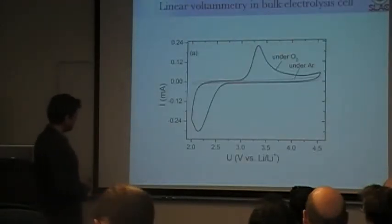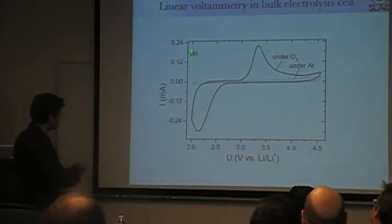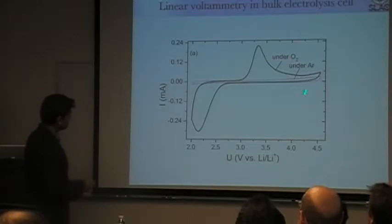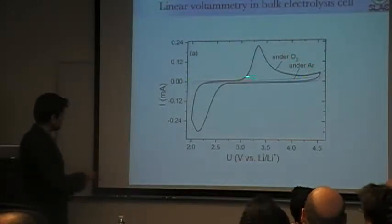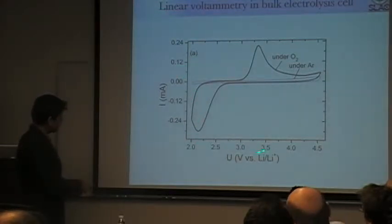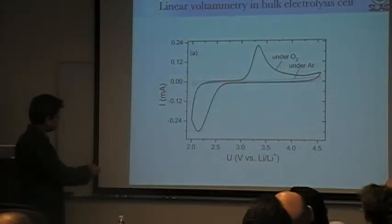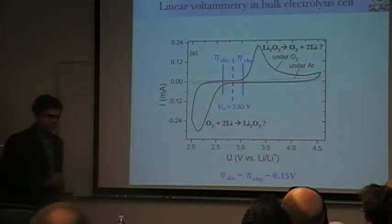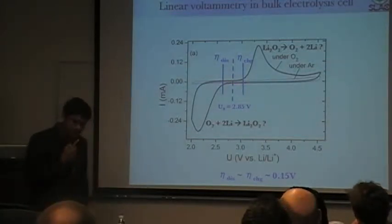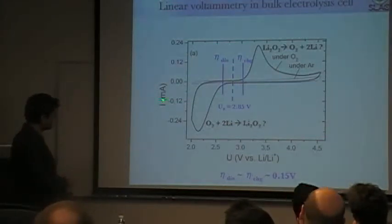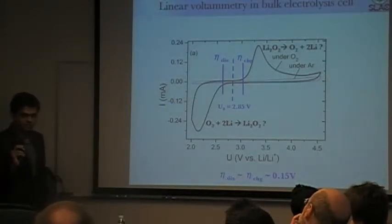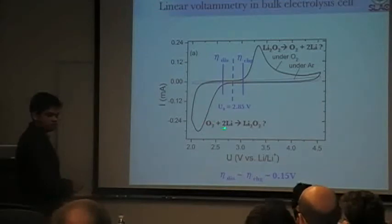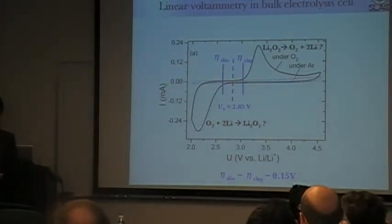What does the experiment say? One can look at linear sweep voltammograms — a plot of current as a function of potential under two different gas-purging environments: argon as background current, and oxygen. Current is plotted as a function of potential measured versus lithium/lithium-plus. The equilibrium potential sits in the middle, with a reduction feature and an oxidation feature at very low overpotentials. However, it is essential to realize that this is only a measure of current — essentially only electrons — and unless you calibrate the electrons to the reaction going on, you cannot say anything conclusive about what reaction is occurring.